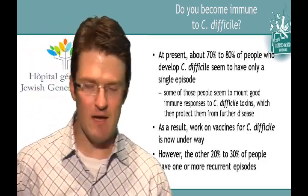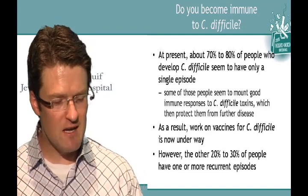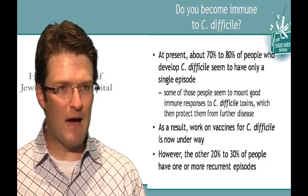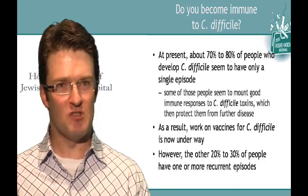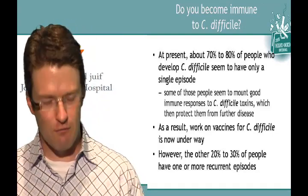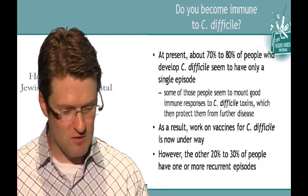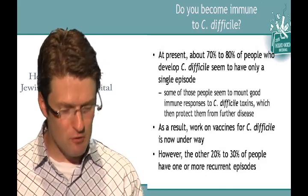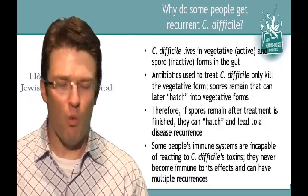Can you become immune to C. diff? About 70 to 80% of people who get C. diff disease seem to only develop a single episode. In that group, many seem to mount good immune responses to the toxins — in a way, those toxins vaccinate them against further disease. As a result, people are now working on developing vaccines for C. difficile that are in various phases of testing. Unfortunately, the other 20 to 30% of people do have one or more recurrent episodes of disease.